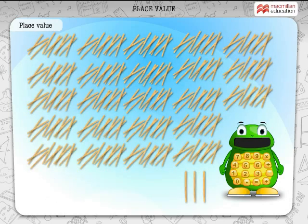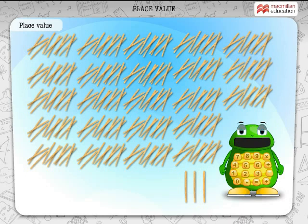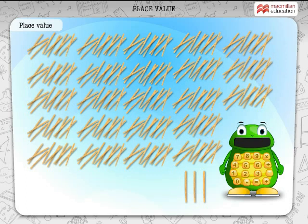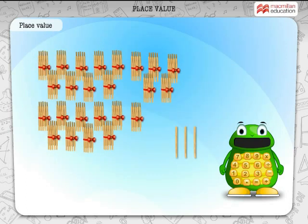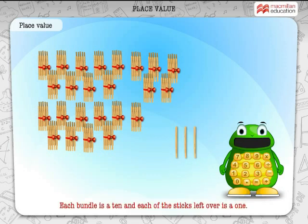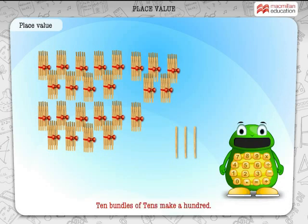Let us try counting again. This time, we are going to do something very difficult. Whoa! This is going to take a long, long time. Here's a smart way of doing it. Arrange the sticks in bundles of tens like this. After making the bundles, we find that some of the sticks are left over. Each bundle is a 10 and each of the sticks left over is a 1.